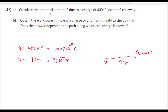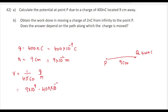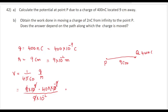We know that electric potential at a point due to an isolated charge is given by V equal to 1 by 4 pi epsilon naught into q by r. Here, 1 by 4 pi epsilon naught is 9 into 10 to the power of 9. Substituting: 9 into 10 to the power of 9 into 400 into 10 to the power of minus 9, divided by 9 into 10 to the power of minus 2. The 9s cancel and 10 to the power of 9 and 10 to the power of minus 9 cancel, giving 400 into 10 to the power of 2, or 4 into 10 to the power of 4 volt.